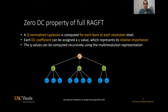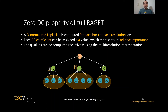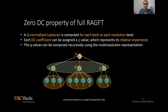We can explain this using the earlier example. We assign a Q value of one to all points at the highest resolution. Then, to compute the Q value of a lower resolution DC coefficient, we just add the Q values of the higher resolution points. We repeat this for the second and third blocks, and at the lowest resolution level at the root, we add the Q values of the DC coefficients.